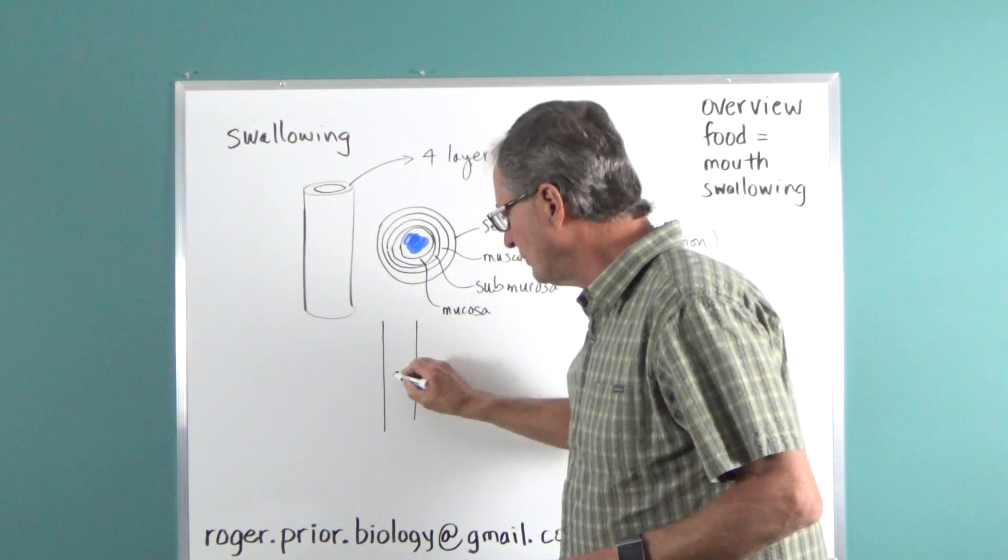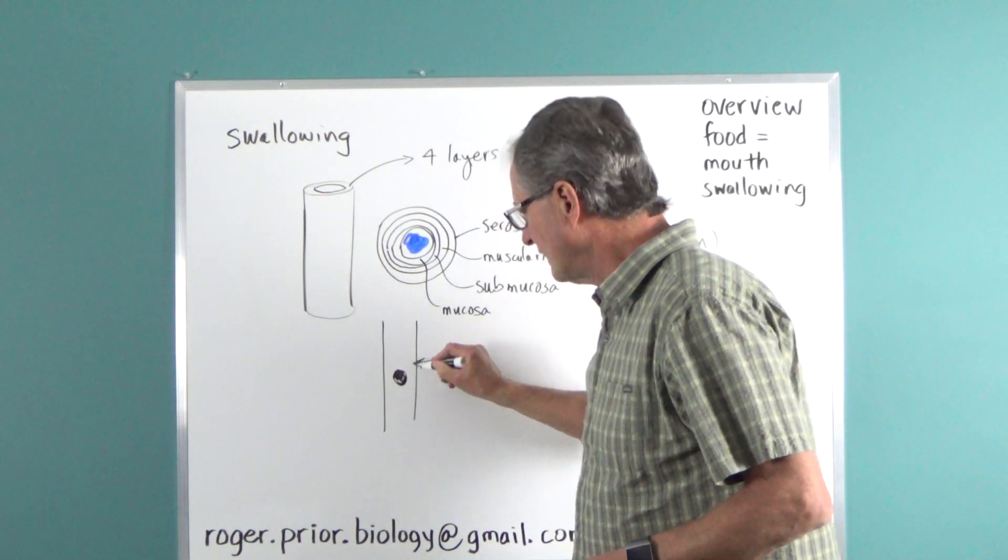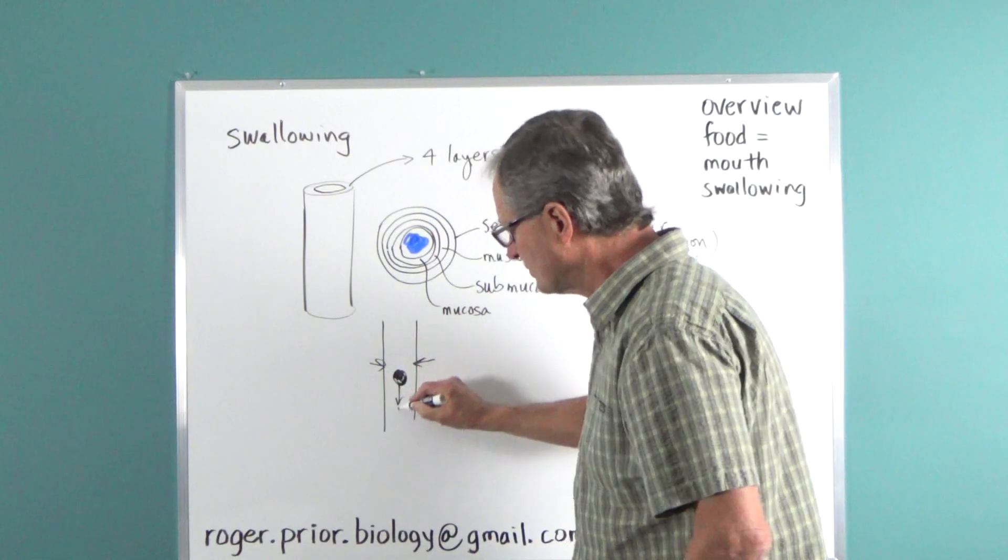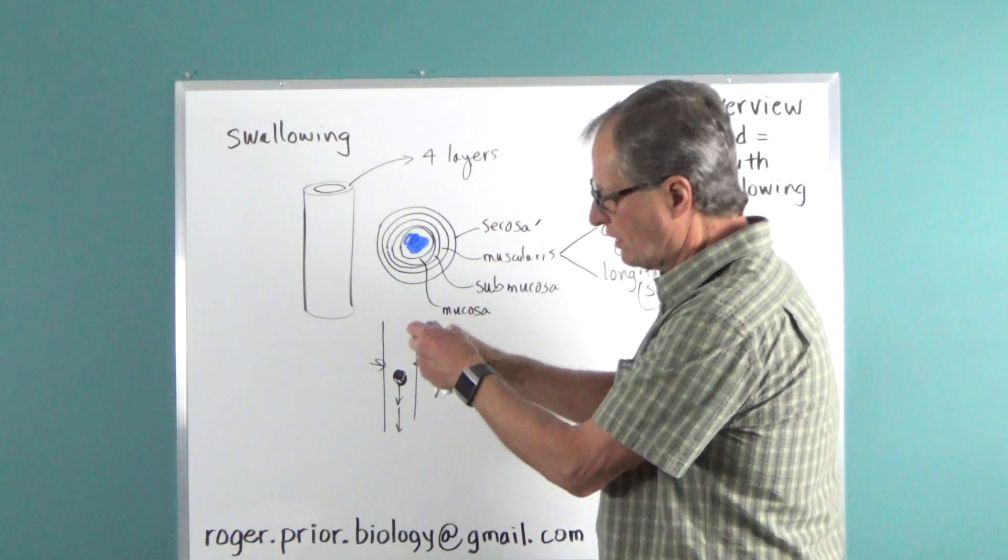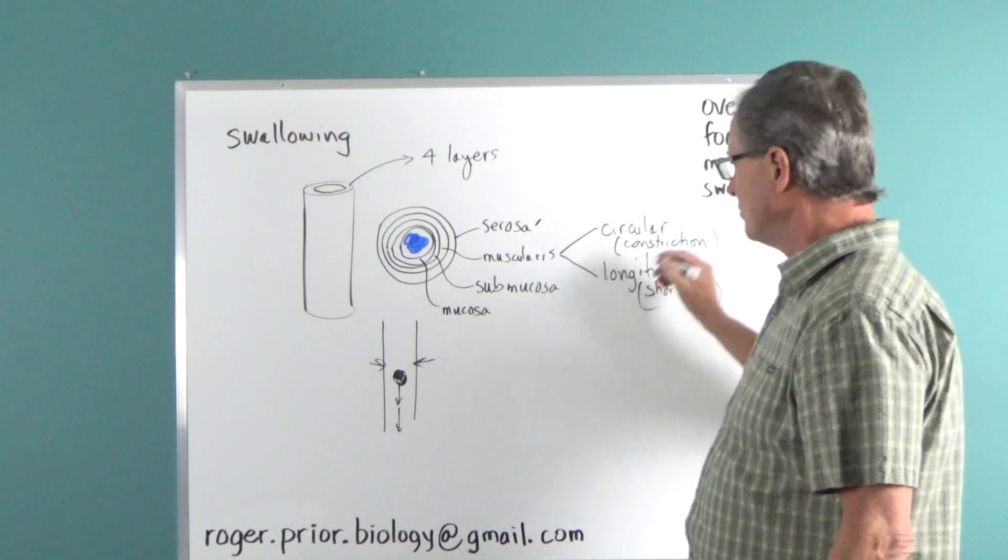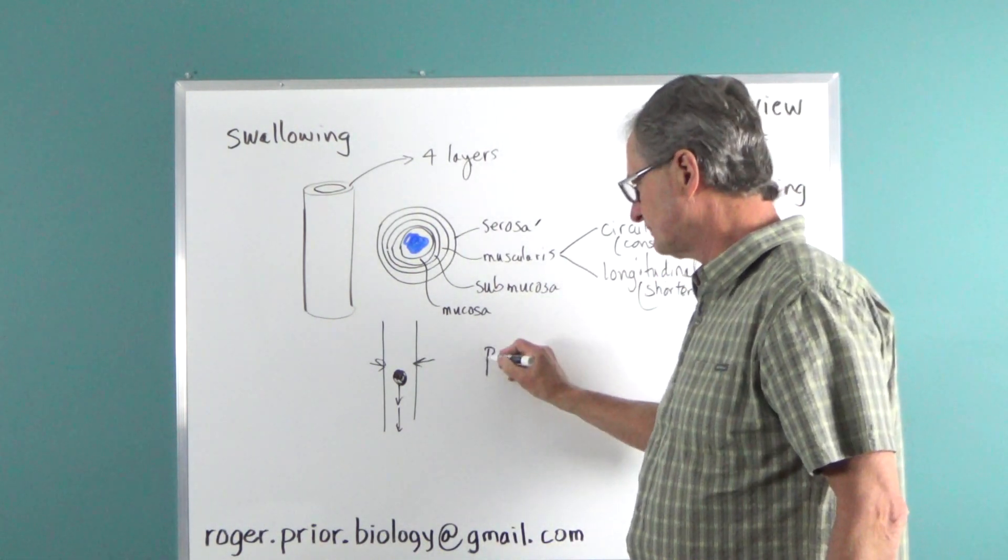The ball of food here, the bolus here. Constriction. It constricts here. It shortens. And what happens is it slowly pushes that ball of food down. Like constricting, shortening, constricting, shortening. Like that. That action is called peristalsis.